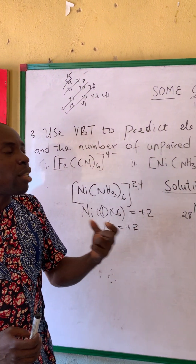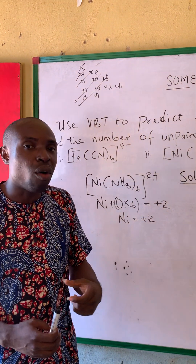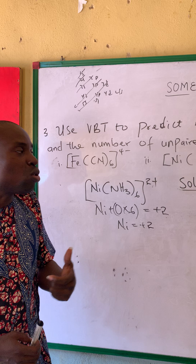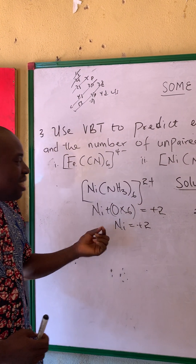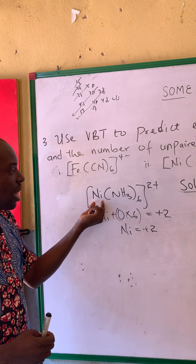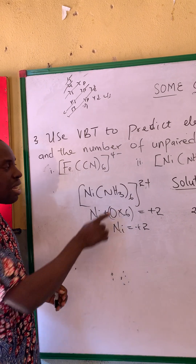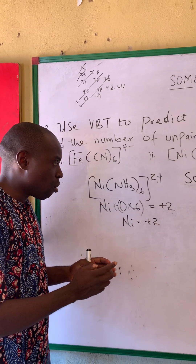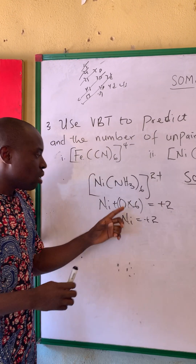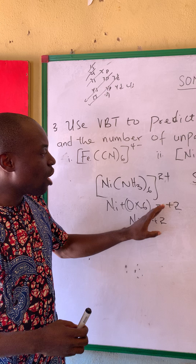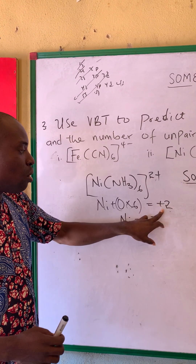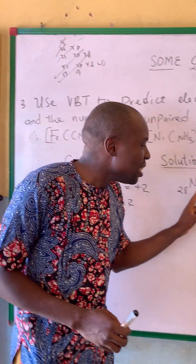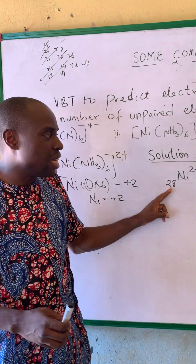Now for me to say nickel(II), I do not know whether it is nickel(II) or nickel(IV). So we can know this by calculating the oxidation state of nickel in this complex. Knowing that ammonia has a charge of zero — it is a neutral molecule — zero times 6 equals zero, which equals the secondary charge here, which is plus 2. So nickel has an oxidation state of plus 2.